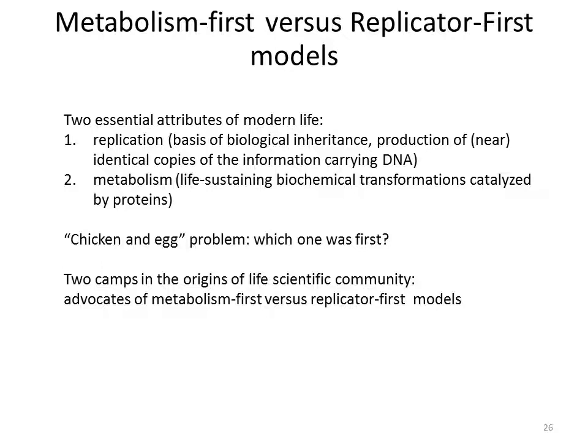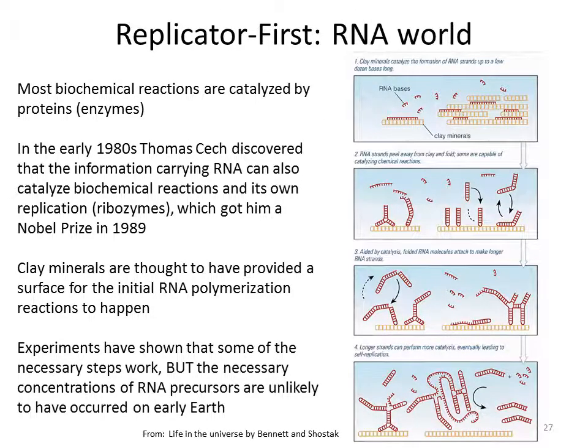In regards to this question, the scientific community can be divided into two camps: advocates of a metabolism first model and advocates of a replicator first model. Although in recent times there is a tendency of scientists to lean towards a metabolism first model. The proponents of the replicator first model think that replication came before metabolism and that RNA was the critical molecule for this to happen, so this model is often referred to as the RNA world.